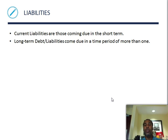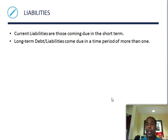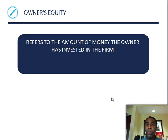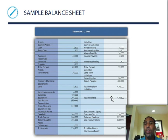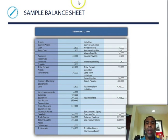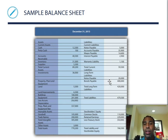Current liabilities are those coming due in the short term. Long-term debt or liabilities come due over a period of more than one year. Owner's equity refers to the amount of money the owner has invested in the firm. On a balance sheet, one side shows your assets — what you have — and the other side shows liabilities — money going out of the company.